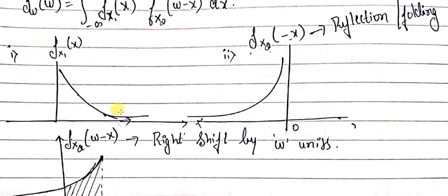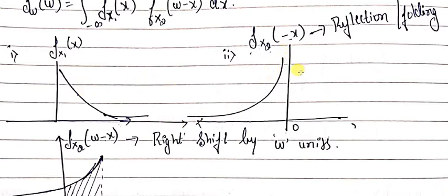To obtain the pdf of W, we convolve this curve with itself. The first operation on fx2 is folding about the origin — whatever curve was on the right hand side is now represented on the left hand side. This gives fx2(minus x): originally the left side was zero and the right had an exponentially decaying curve; now the right side is zero and the left side has the decaying curve. They are mirror images of each other.